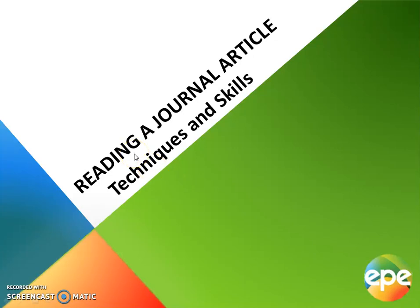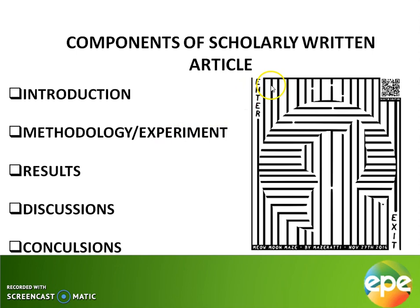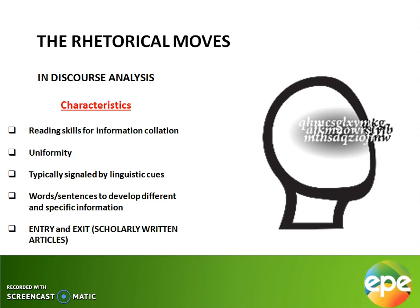In this presentation, I'll be talking about reading a journal article — the techniques and the skills. Every scholarly written article has the following components: the introduction, the methodology or experiment section, the results section, the discussion section, and the conclusion section. The introduction serves as the entry while the conclusion serves as the exit, and in between lies the compartment of information that needs to be processed and understood.